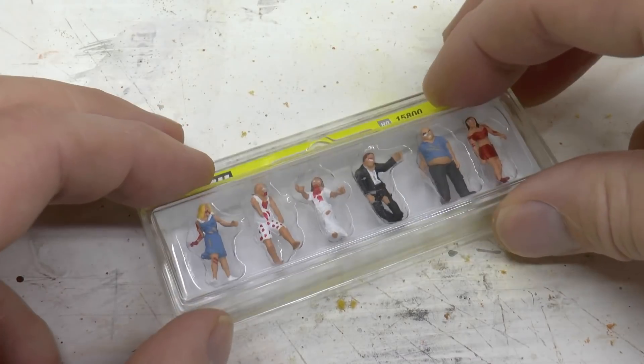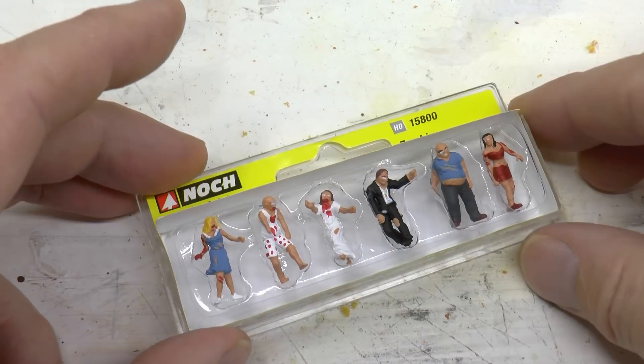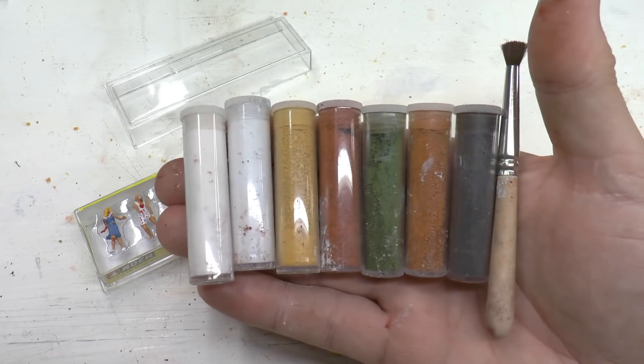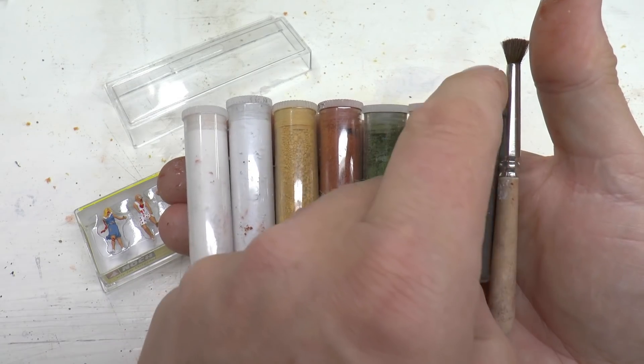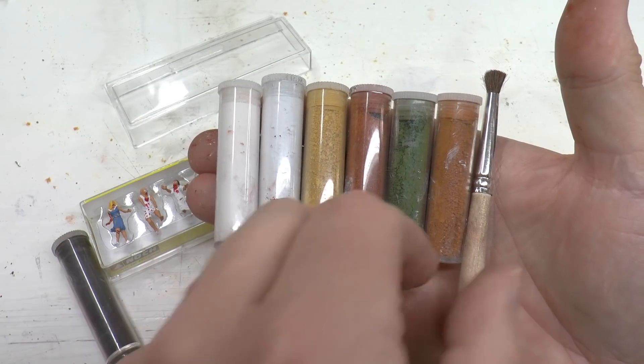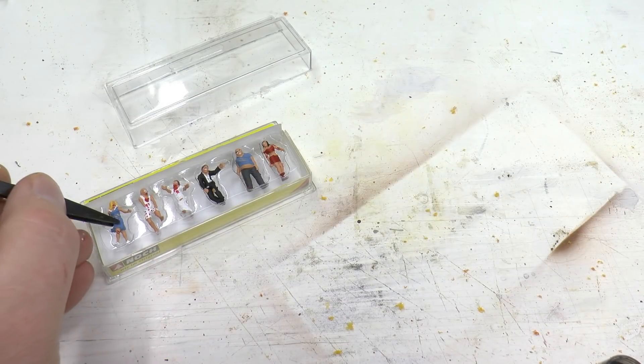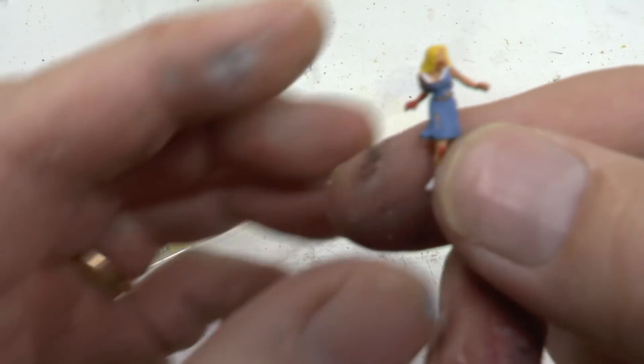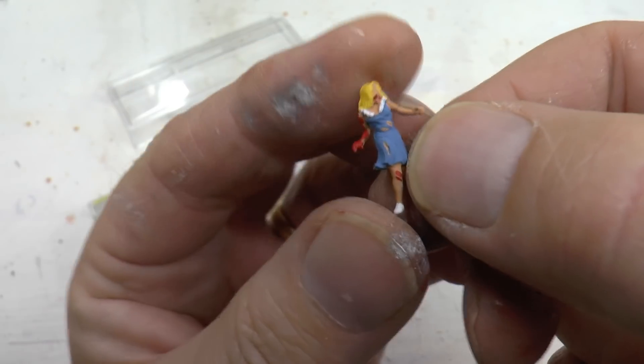Now that one is in place but we need some zombies. Noch has this kit 15800 which consists from six really nice looking, or not nice looking, zombies. So I took a weathering kit which is a pastel powder and I'm thinking they look a bit too tidy to be the kind of zombies I know.